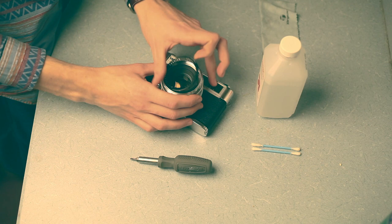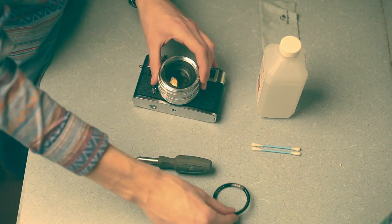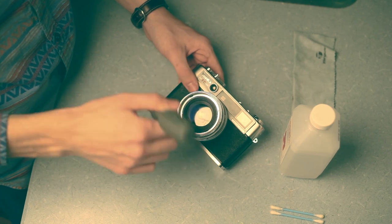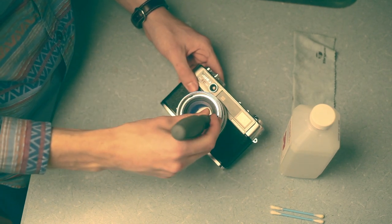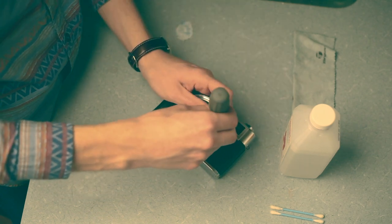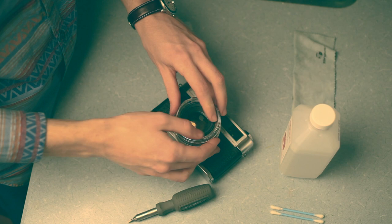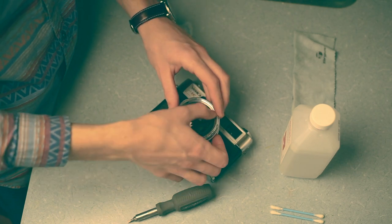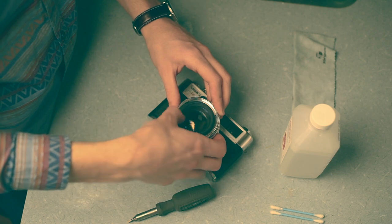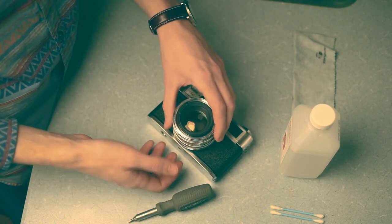Once you do that, you'll take it and put it to the side. Now you're going to take the screwdriver and loosen this inner ring that holds the inside element. Alright, pop that out.